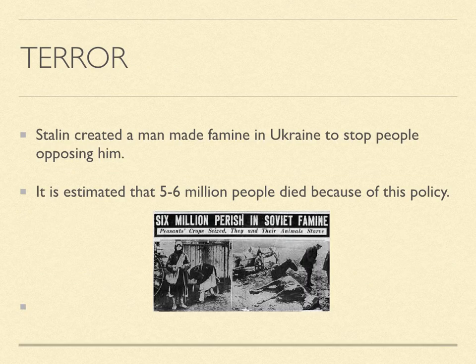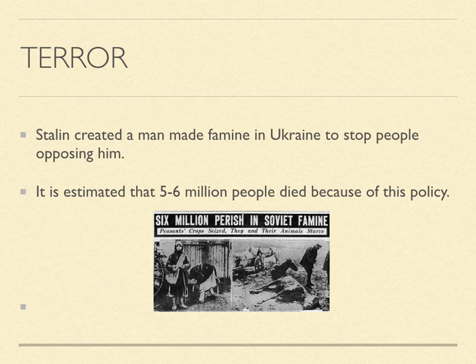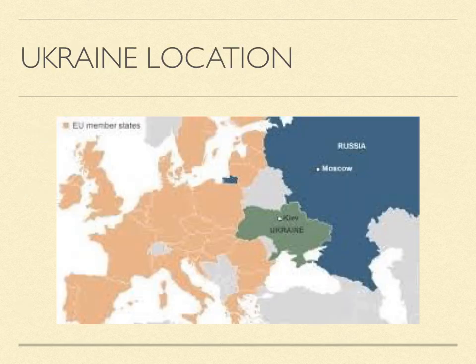Stalin also created a man-made famine in Ukraine to stop the people there from opposing him. It is estimated that five to six million people died because of this policy. We've looked at the famine in Ireland and the devastation of a million people dying with a further two million emigrating — but five to six million people died from a famine created by Stalin, who took the food from the country to get control over these people. As you can see from the map, Ukraine is shown in green, and they were trying to break away from the Communist Party, and Stalin crushed them with his man-made famine.